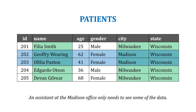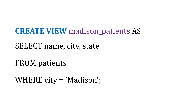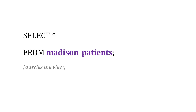So let's create a view to do that. We'll say CREATE VIEW madison_patients AS SELECT the name, the city, and the state — just some of the columns — from the patients table WHERE the city is equal to Madison. Then what we can do is just query that view instead of the underlying table to only see a portion of the data, at least what we need for our role.